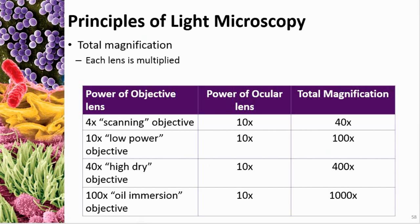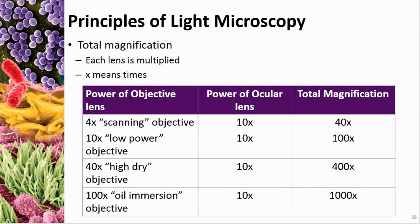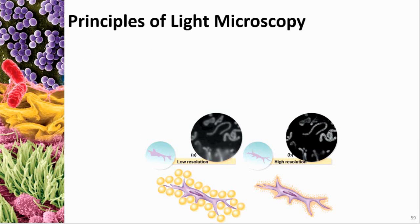The highest power — 100× objective multiplied by 10× ocular — gives 1,000× total magnification, meaning we're increasing the size 1,000 times. So something that's 1/1,000th of a millimeter in size can be magnified to one millimeter in apparent size.